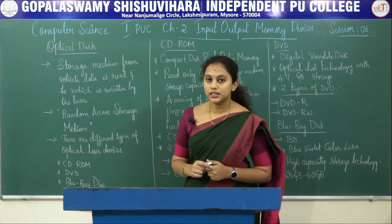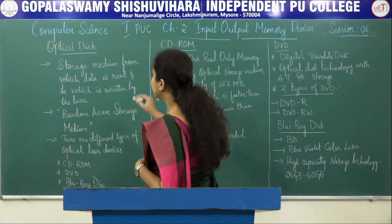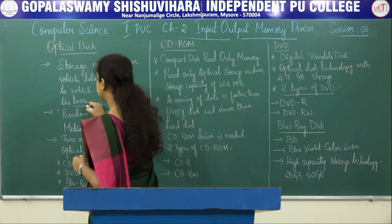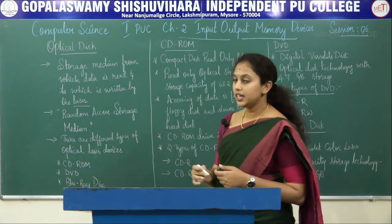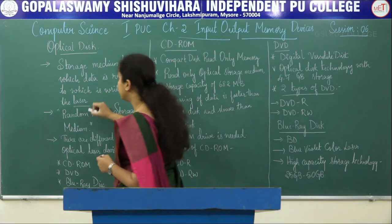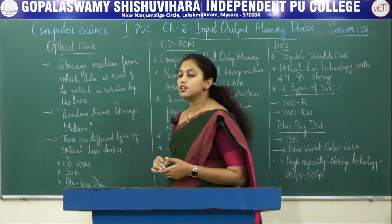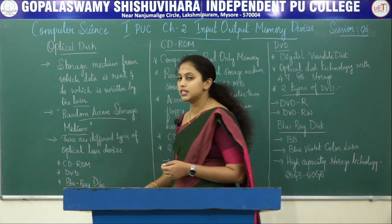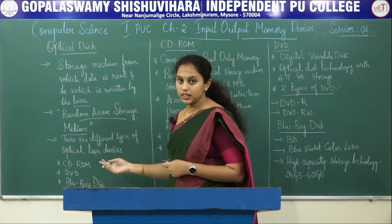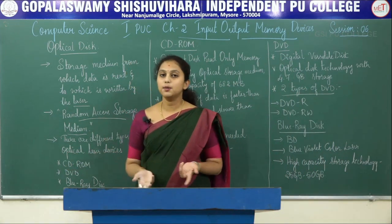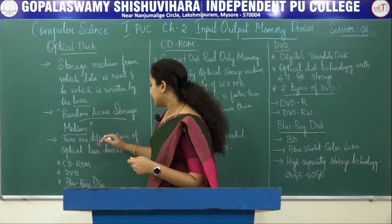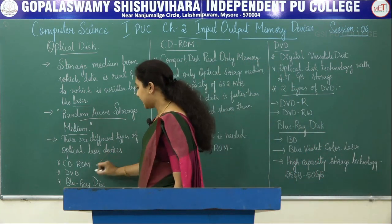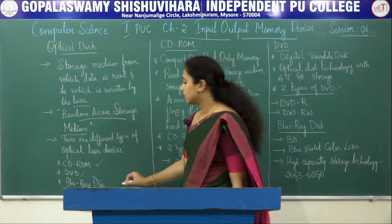Next is optical disk. Optical disks are storage media from which data is read and to which it is written using a laser. They are random access storage media, meaning we can access data from any point on the disk. There are different types of optical laser devices: the first is CD-ROM, the second is DVD, and the third is Blu-ray disk.